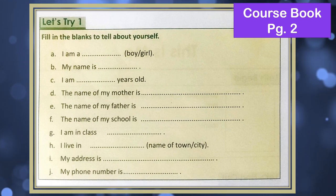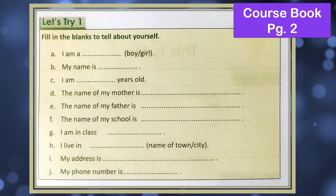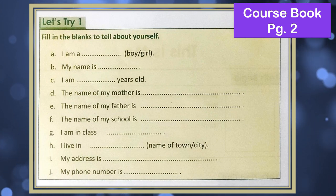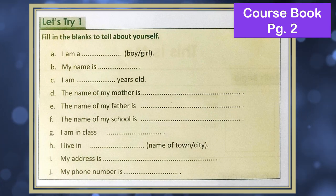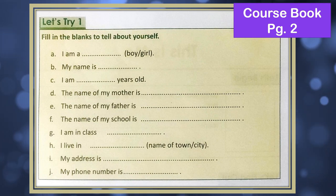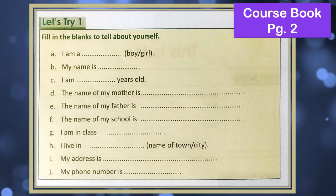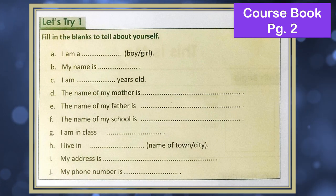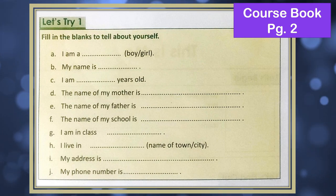Next one: The name of my mother is — here you will write down your mother's name, Mrs. whatever your mother's name is. The name of my father is — write your father's name here. You can take help from your parents. For now you can take help from your parents; they will help you write their names, and then you can memorize them.